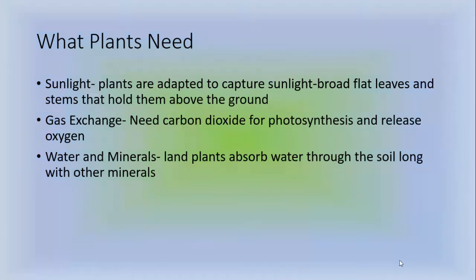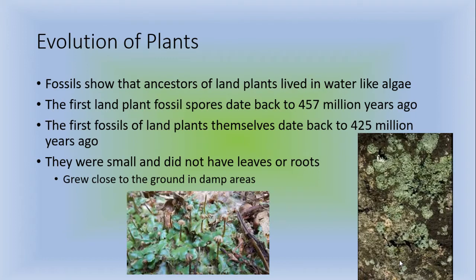What plants need. They need sunlight. Plants are adapted to capture sunlight on their broad flat leaves and stems that hold them above the ground. They also need gas exchange. So they need carbon dioxide for photosynthesis and they need to be able to release oxygen. And they also need water and minerals. So land plants are going to absorb water through the soil along with other minerals.